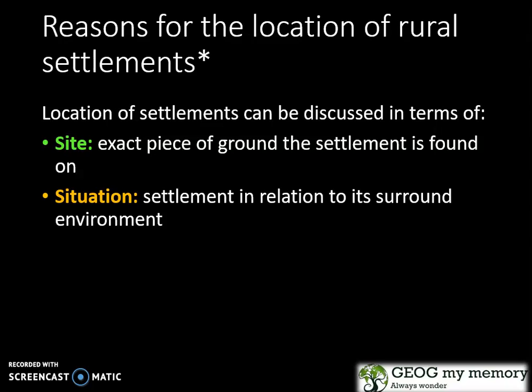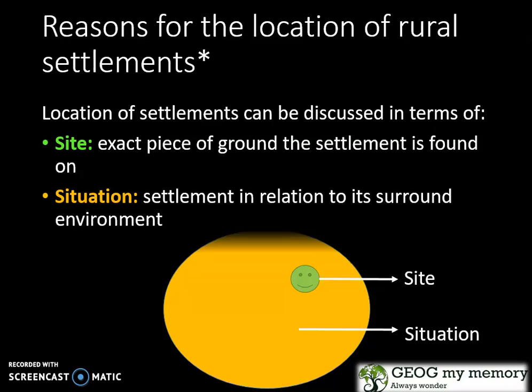There are two reasons for the location of rural settlements: site and situation. Site refers to the exact piece of ground the settlement is found on, while situation refers to the settlement in relation to its surrounding environment.